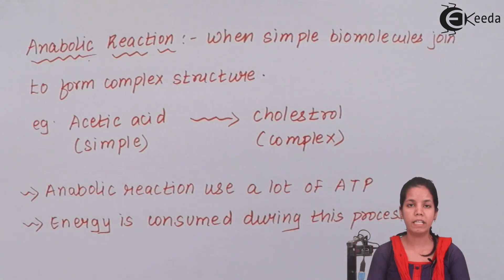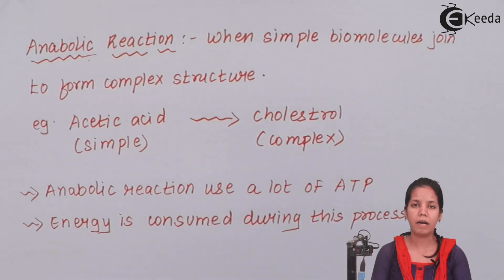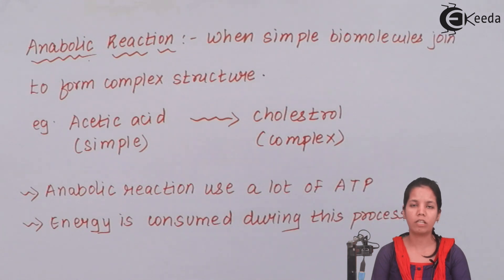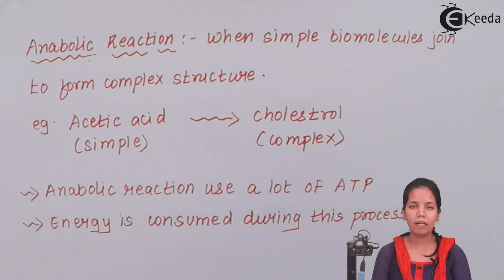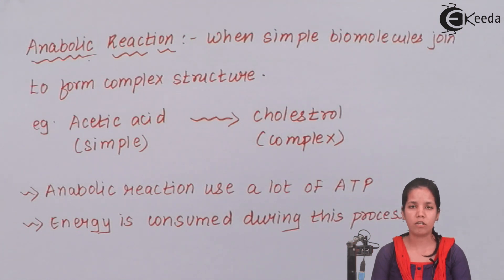So students, in this part of the chapter, we have studied about two types of reactions: anabolic reactions and catabolic reactions. I hope you are clear about both types of reactions. Thank you.